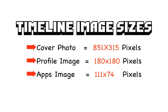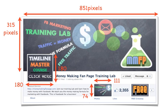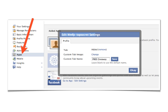Let's go over the different timeline image sizes. The first one is the cover photo — again this is 851 by 315 pixels. Your profile image is 180 by 180, and then the apps image is 111 pixels by 74 pixels. The top one is the cover photo, the one to the left is your profile image, and your app images are down to the right at 111 by 74. If you want to do custom images for your apps, you need to go into your app settings and edit settings within that particular app — they do allow you to go ahead and change the photo.